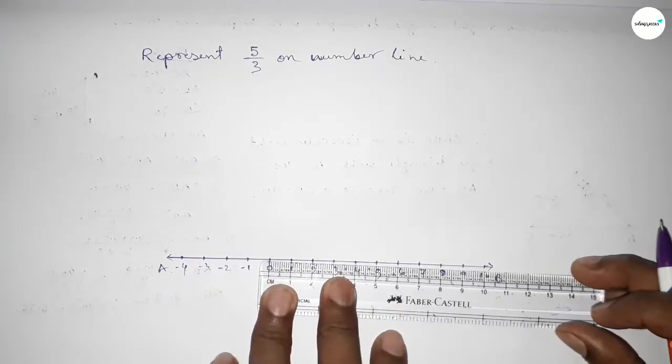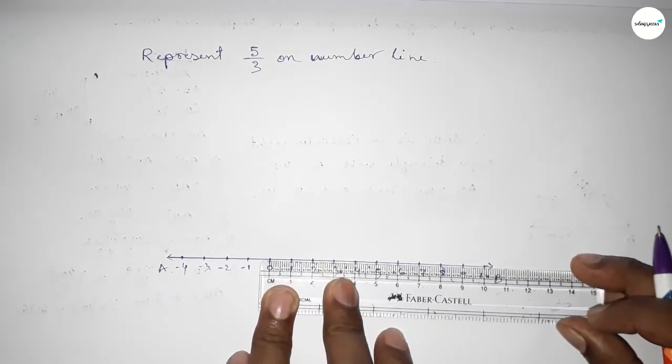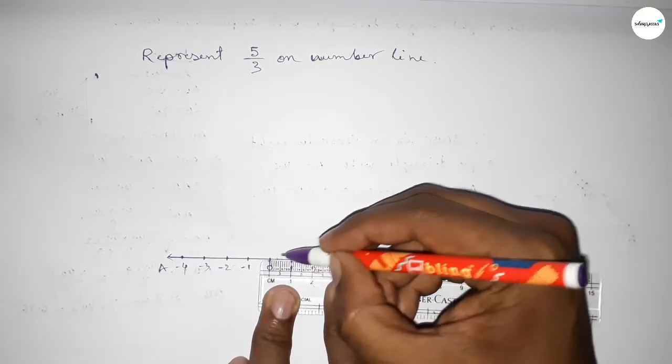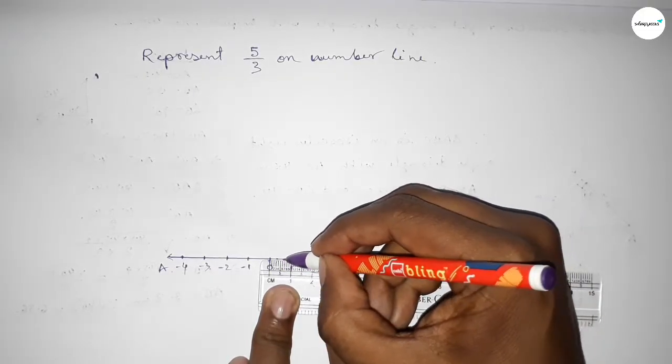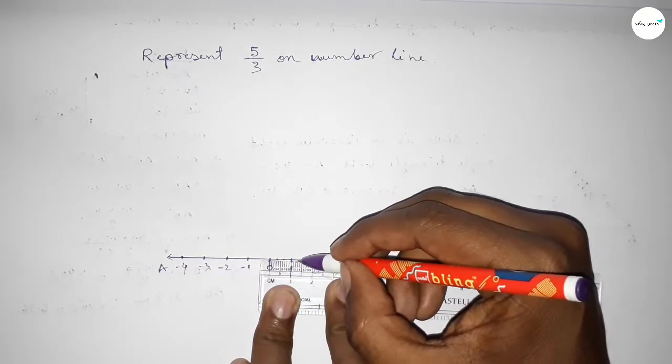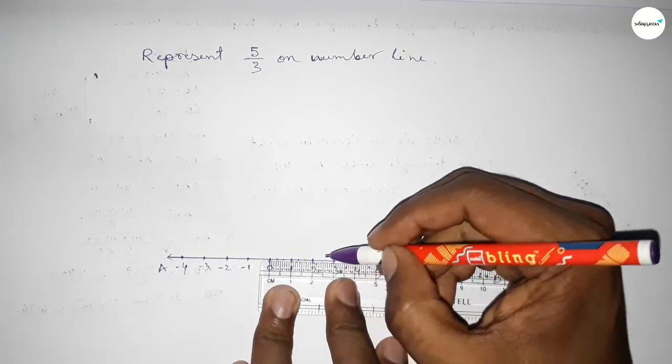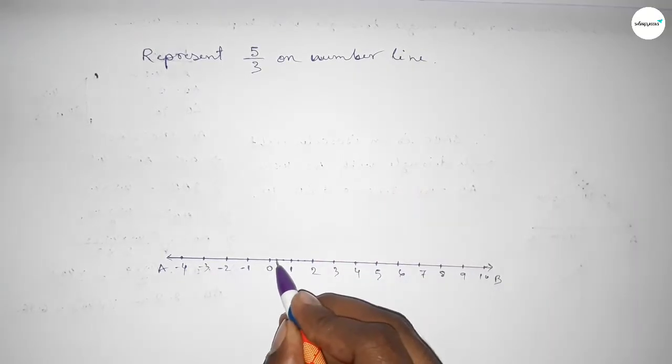Next, we have to divide the distance between 0 to 1, 1 to 2, 2 to 3 into 3 parts approximately. So this is point-6 something, similarly this is point-3 something, and this is point-6 something approximately.